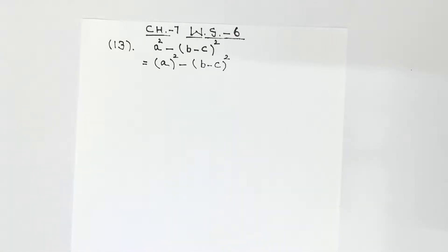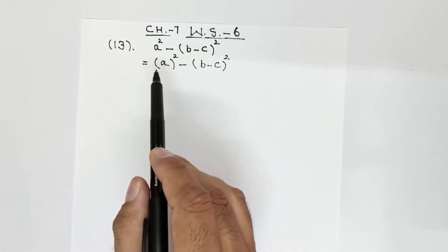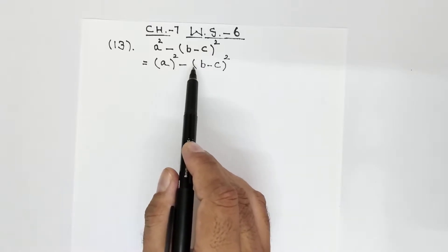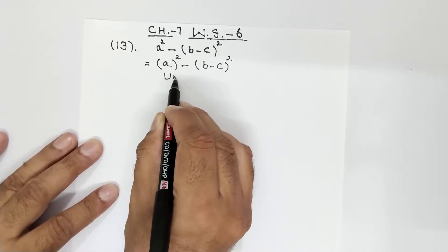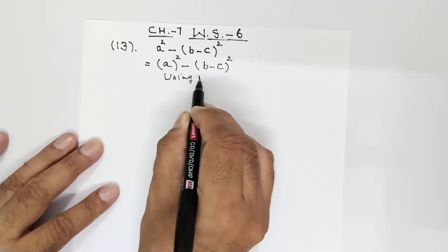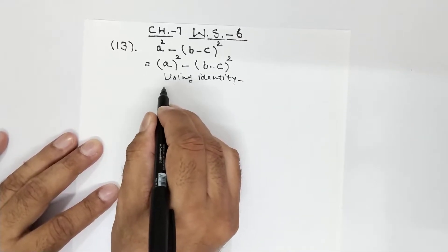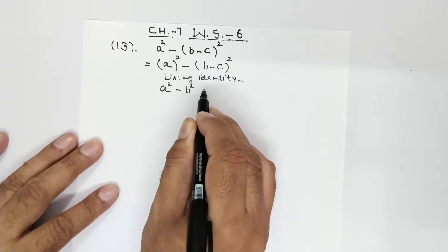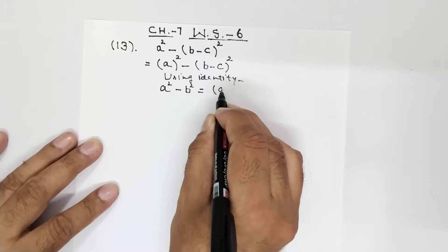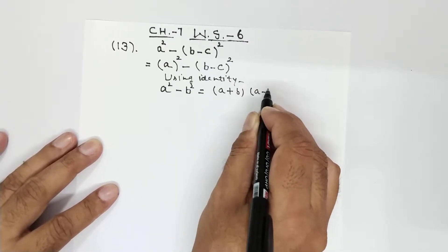Now we have to identify which identity will be used. This is of the form a² minus b², where a is 'a' and b value is (b minus c). So using identity: a² minus b² is equal to (a plus b) into (a minus b).